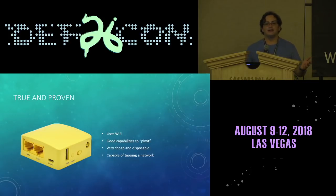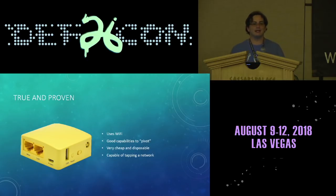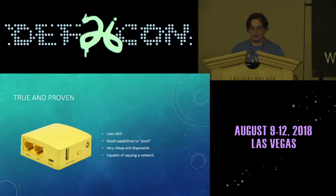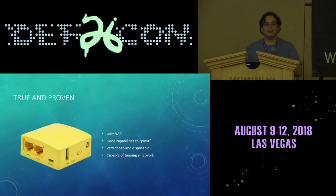True and proven is Wi-Fi. If you want to send data out of a network, use Wi-Fi. It has pretty good pivot capabilities because you can use any device you buy at the store. It's sometimes capable of tapping a network since you're using basically a Linux computer for routing. But it's not very long range and not necessarily very stealthy — if you're running 'hacker net' during a test, that doesn't make it stealthy.